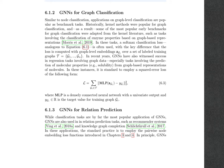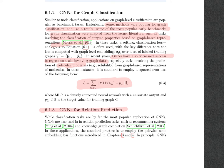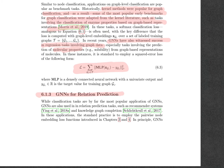Now let's talk about classifying an entire graph. Kernel methods were popular for this, but in recent years GNNs have also been very successful in these sorts of tasks, with an example being predicting molecular properties — many of these being regression problems dealt with using a squared loss. GNNs are also used for relation prediction, where the standard practice is to employ pairwise node embedding loss functions.